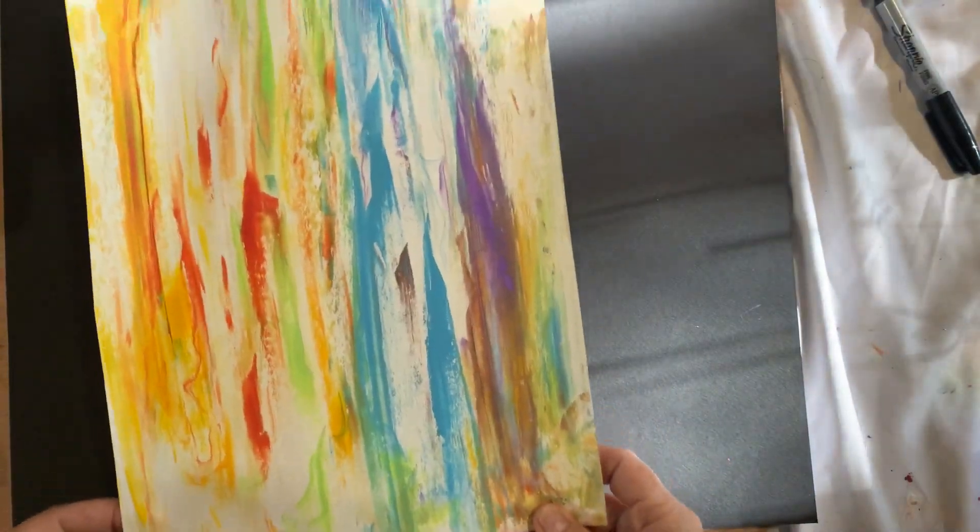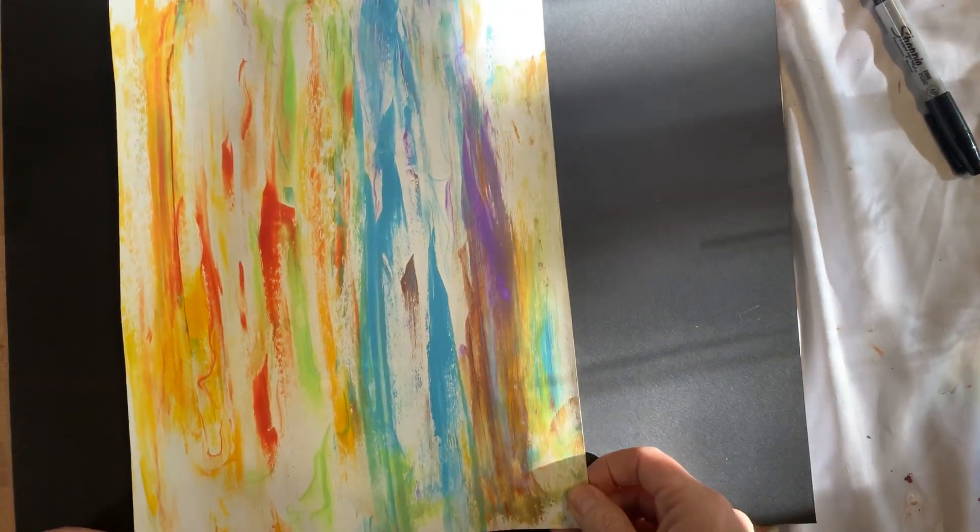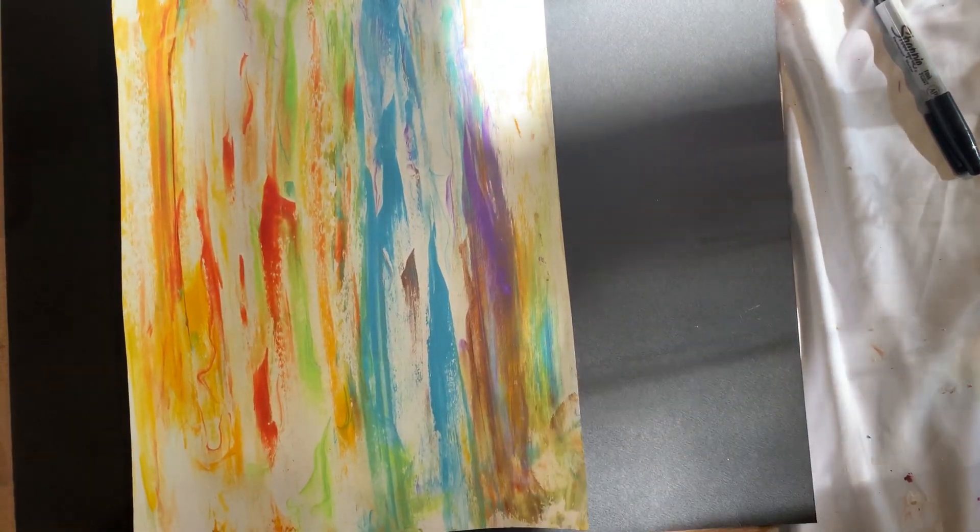Okay, so now we're going to be doing part two of our trees. I have some black paper here. You don't have to use black paper, you can use white paper, you can color the background in blue, or you can use blue paper. I'm just using black because that's what I have and I thought it would look nice, like a nice contrast. This is how my paper came out.